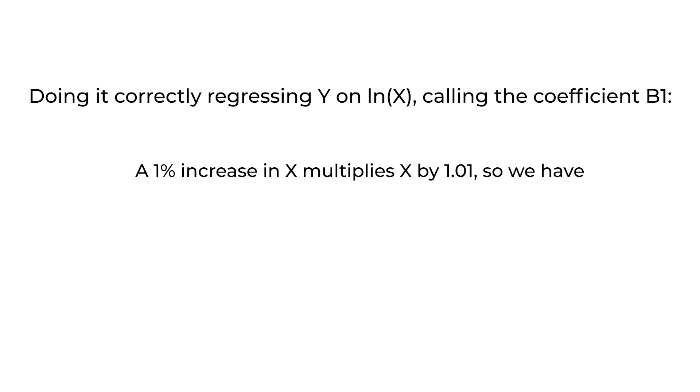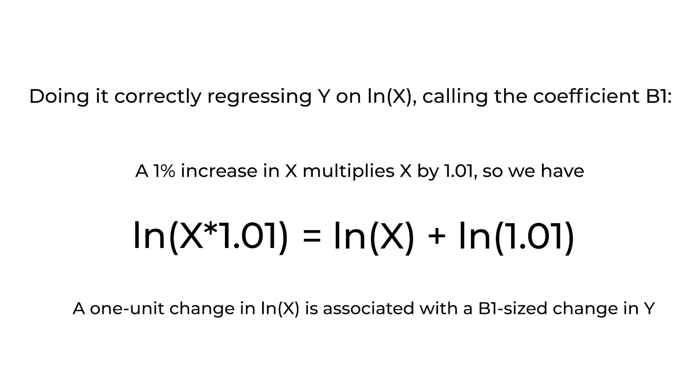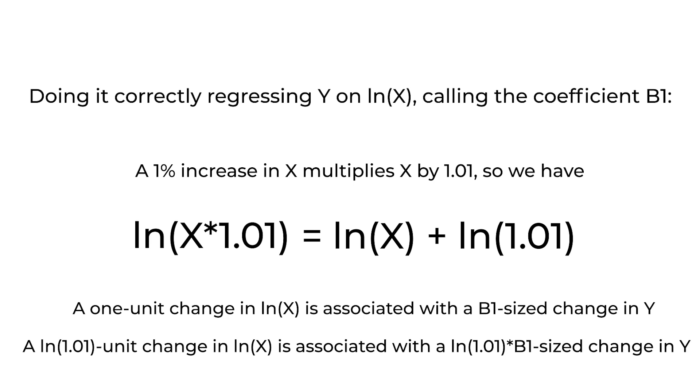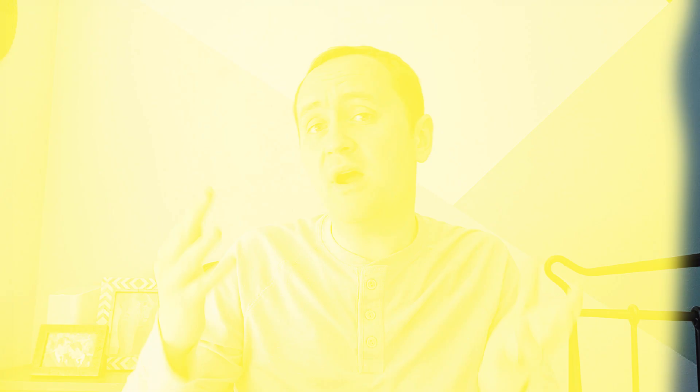Now say we're regressing y on the log of x and want the effect of a proportional change in x. A one-percent increase in x means looking at log(x · 1.01). We can pull that apart: log(x · 1.01) = log(x) + log(1.01). So log(1.01) is how many units log(x) has increased. The effect on y is then β₁ · log(1.01). That's the accurate approach — converting a linear change from the regression model into a proportional change we can interpret.